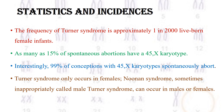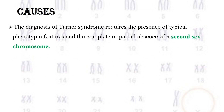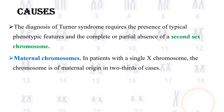Turner syndrome only occurs in females. Noonan syndrome, sometimes inappropriately called male Turner syndrome, can occur in males or females. The diagnosis of Turner syndrome requires the presence of typical phenotypic features and the complete or partial absence of a second sex chromosome.